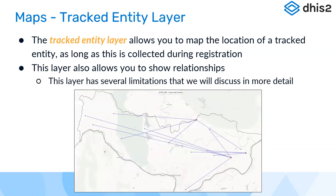The tracked entity layer is a separate layer, different from the event layer. It allows us to map the locations of tracked entities as long as coordinates are collected during registration. This layer also allows you to show relationships. Note that it currently has some limitations which we'll discuss during the demonstration.